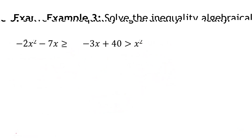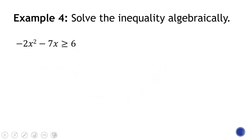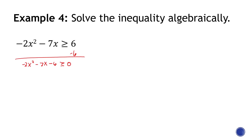For the fourth and last example, this is not in standard form. I'll subtract 6 from both sides. The leading term is again negative, so I multiply by negative 1 to make it positive. I'm not sure if this can be factorized, so I'll use the quadratic formula. Identify A, B, and C, and solve for x.